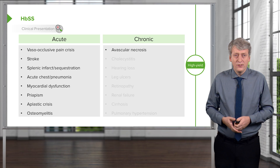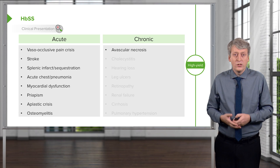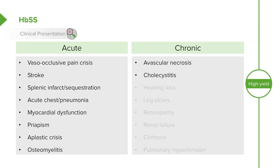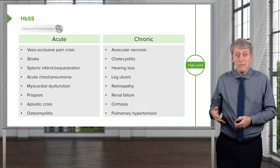Patients with hemoglobin SS disease will eventually develop chronic conditions as well, such as avascular necrosis of joints like the hip. They may develop cholecystitis from frequent blood cell turnover resulting in gallstones and obstructive biliary tree disease. Patients may develop hearing loss, leg ulcers from inadequate perfusion of the extremities, retinopathy, renal failure from sludging within the kidneys, and liver cirrhosis. If the lungs continue to get acute chest syndrome, they may eventually develop pulmonary hypertension.